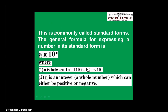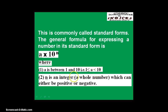This topic is called standard index form and the general formula for solving a problem like this is: a times 10 raised to power n, where a should be between 1 and 10 — that is, a should be greater than or equal to 1 and less than 10. And n should be an integer, meaning n can be negative or positive.